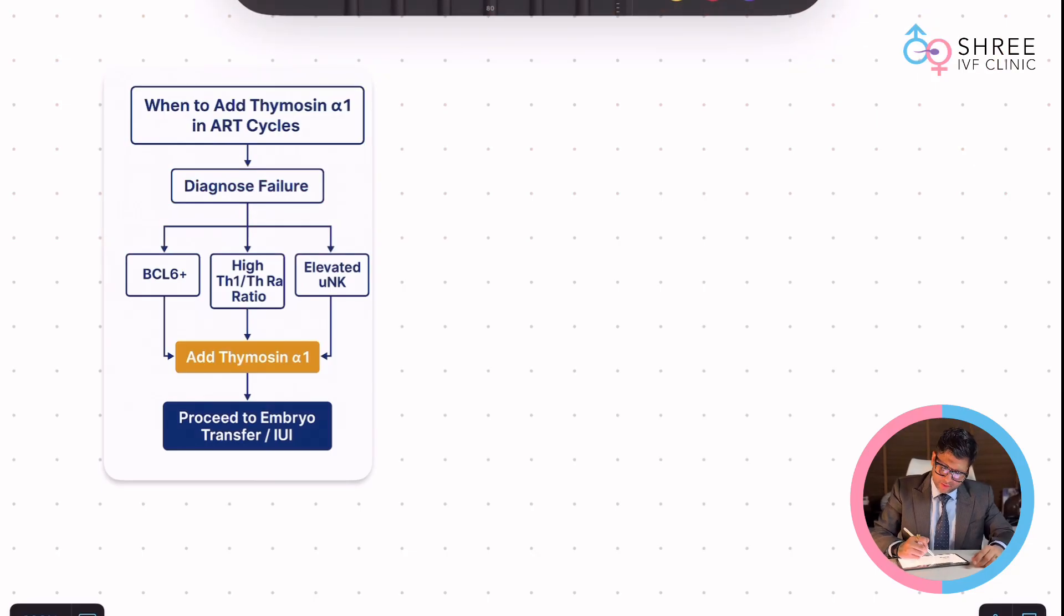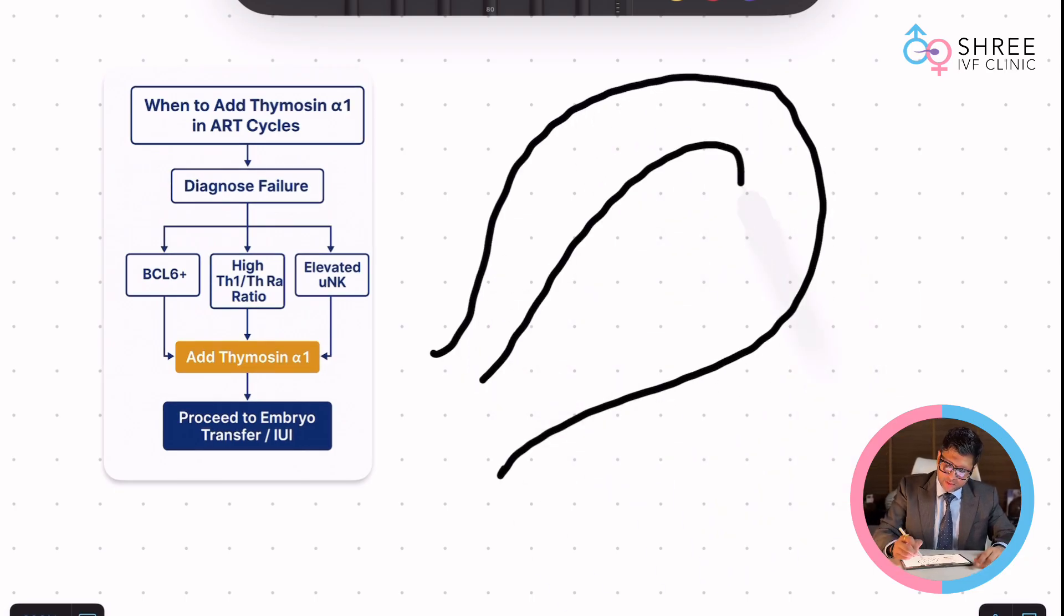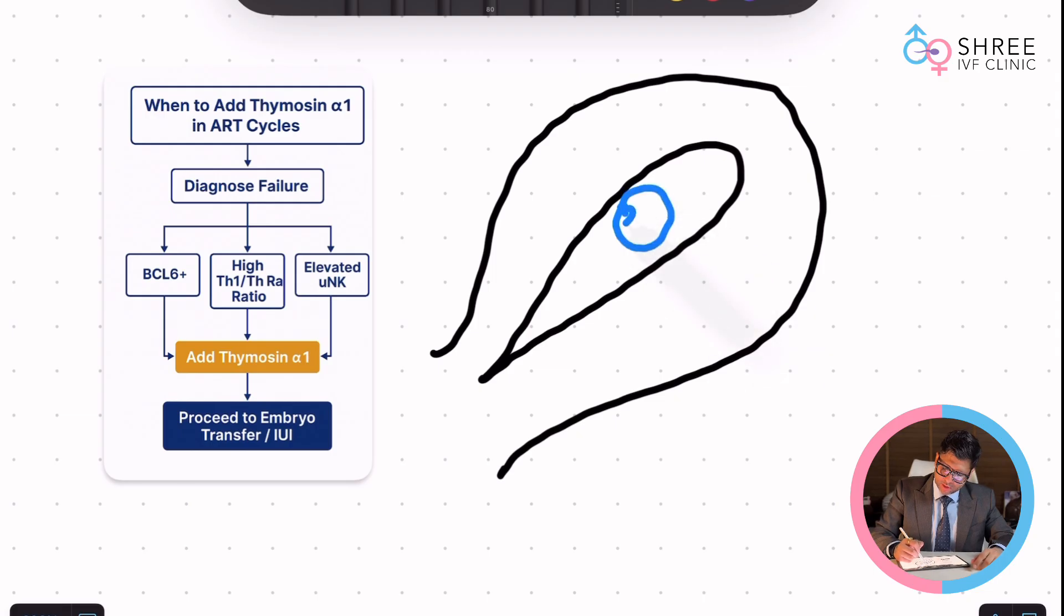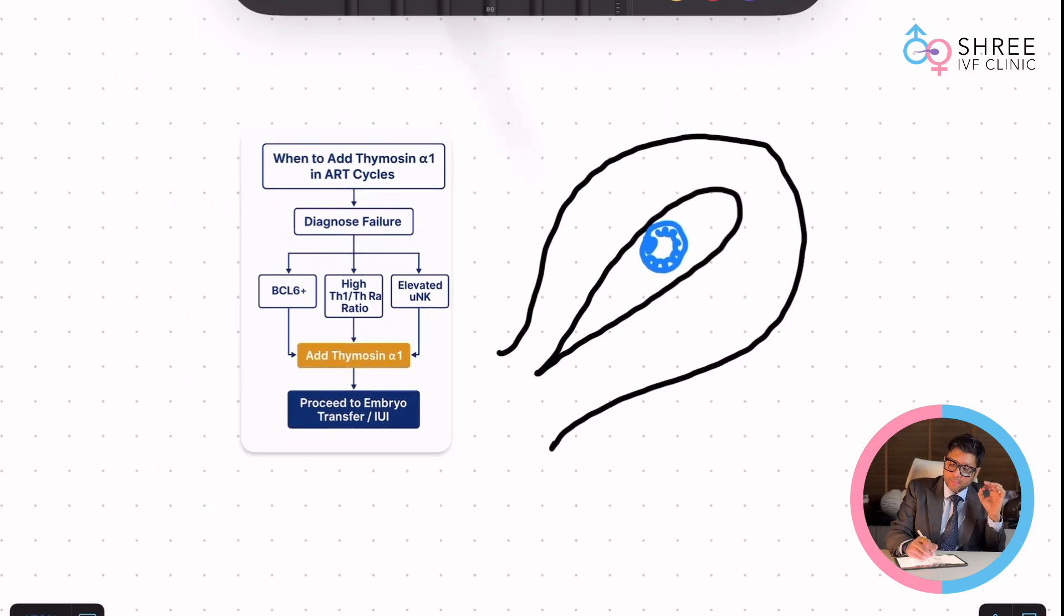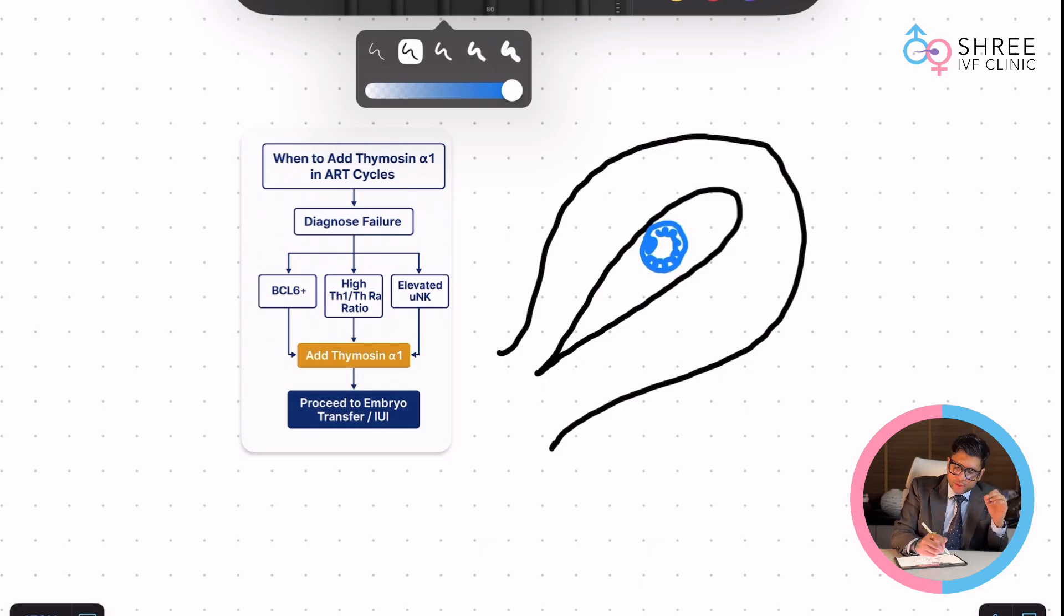Whenever we are wanting to study how and where we are going to use Thymosin Alpha, first we need to understand that basically we are wanting to make sure that this embryo which is inside gets implanted. Now comes the most important thing which we should know. Remember, in order to give Thymosin Alpha, you need to have a normal pelvis.